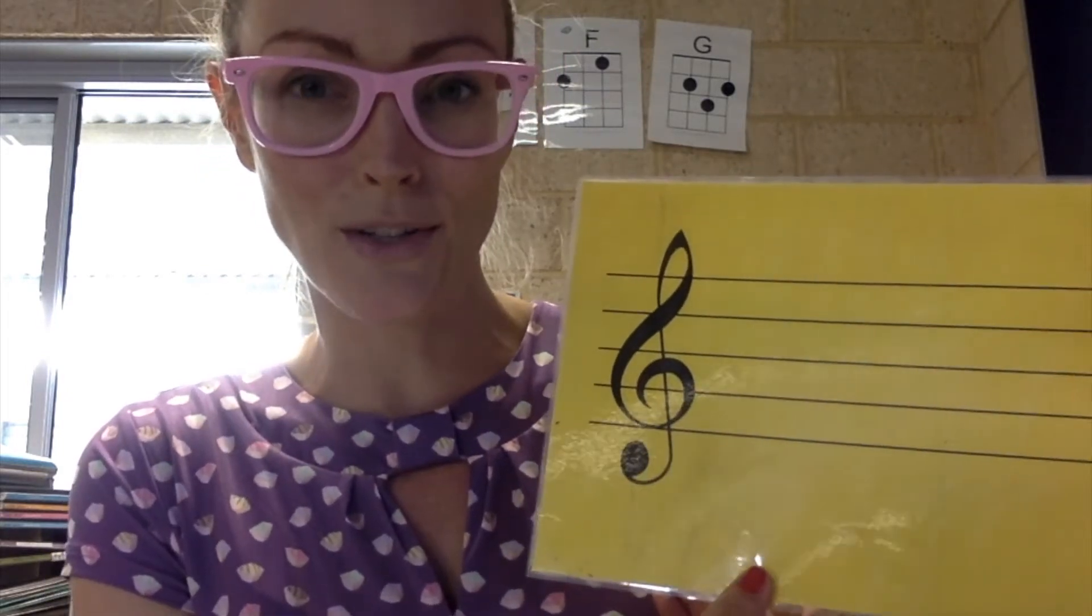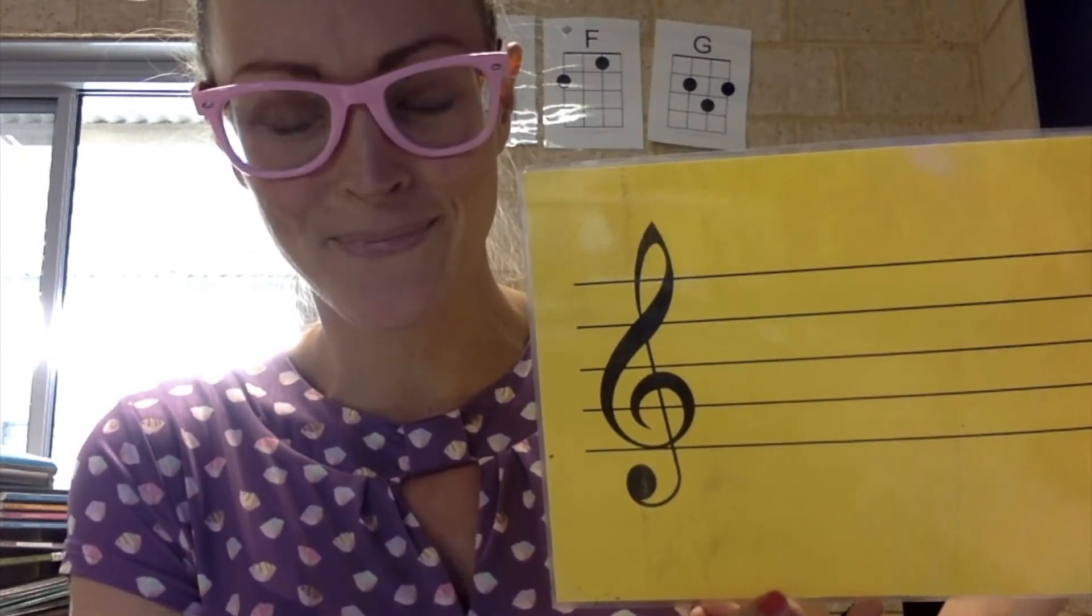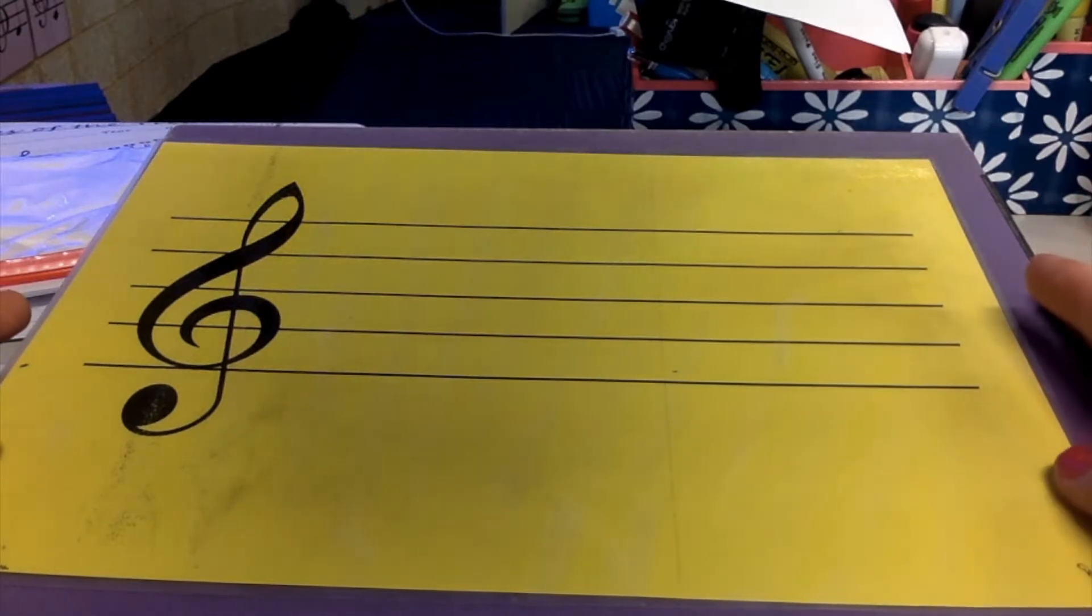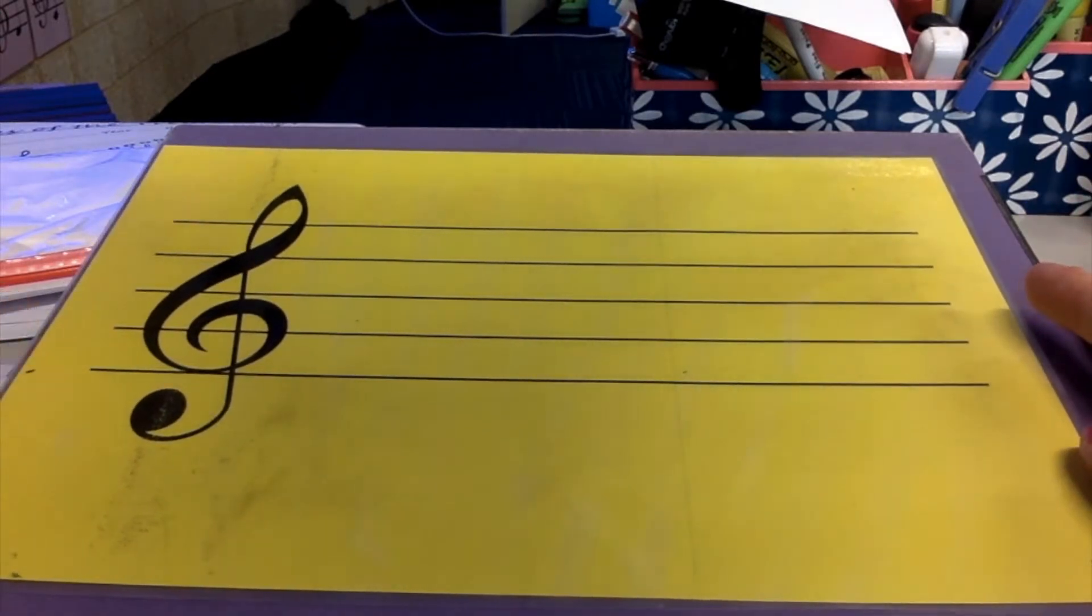The first thing I want you to do is draw yourself a template on a piece of paper. I've got one here, but I kind of cheated because it was already there, so I'm going to use a marker to draw another one. When we draw a treble clef, some people like to start from the bottom and go up and around.